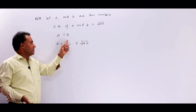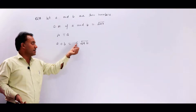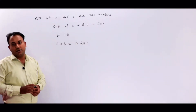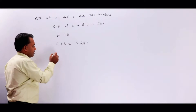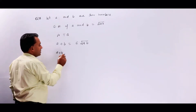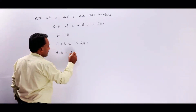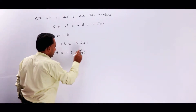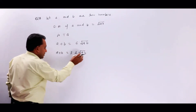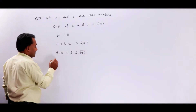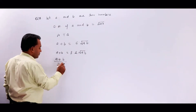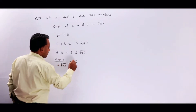कि A, B का sum, geometric mean का 6 times है। अब मैं इसे ऐसे लिख सकता हूँ — A + B = 3 × 2√(AB)। है ना? ऐसे लिख सकते हैं। अब 2√(AB) को denominator में लिखते हैं, तो जाएगा: A + B upon 2√(AB) = 3।